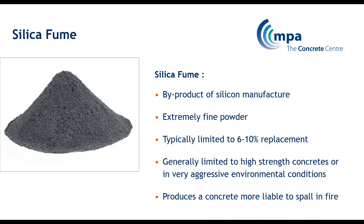Another addition is silica fume, which is a waste byproduct of silicon manufacture. It is extremely fine — there are 2 million particles of silica fume for every particle of cement — so you get really dense, packed concrete. Typically up to about 10% replacement is used. Because it gives a really dense concrete, it's excellent in aggressive environmental conditions and for high-strength concrete, but it's not so good for fire spalling. Be aware of that if using silica fume concrete where fire is a risk. There are methods to prevent that problem, but you need to be aware of it.